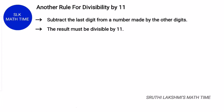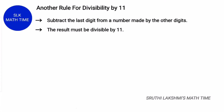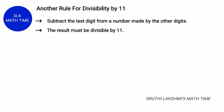Now let's see another rule for divisibility by 11. First, we have to subtract the last digit from the number made by the other digits. The second step is to see if the result is divisible by 11.